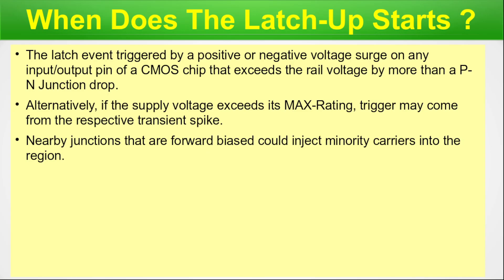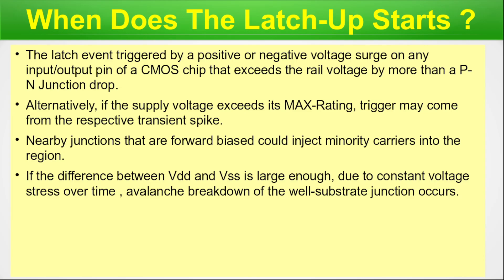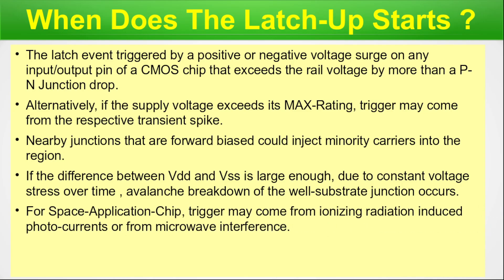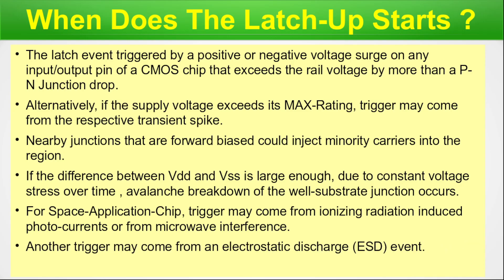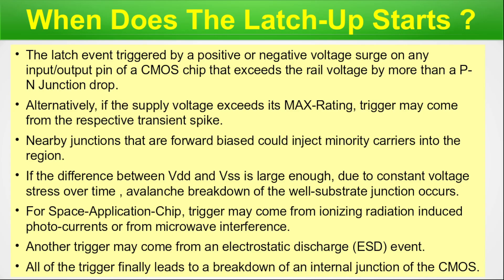Nearby forward-biased junctions inject minority carriers into the region. For space applications — such as in a satellite or spaceship — the trigger may come from ionizing radiation-induced photocurrents or microwave interference. Another trigger may come from an electrostatic discharge (ESD) event. All of these triggers ultimately lead to a breakdown of the internal junction of the CMOS, and the PNPN parasitic structure becomes latched up, similar to the SCR structure which then maintains its current-flowing status.